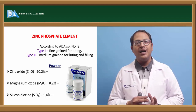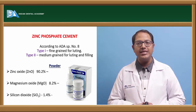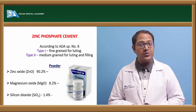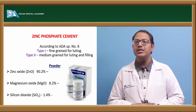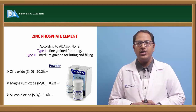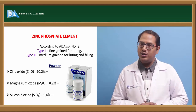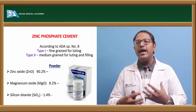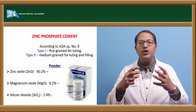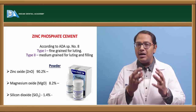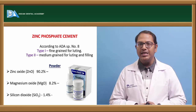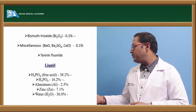The liquid of zinc phosphate cement consists of phosphoric acid (38.2%), water (36%), phosphoric acid with water (16.2%), and traces of zinc and aluminum, both of which act as buffering agents reducing the reactivity of the powder and liquid. The reaction produces a zinc phosphate amorphous solution with some unreacted zinc oxide remaining.